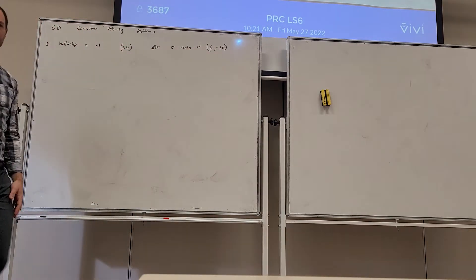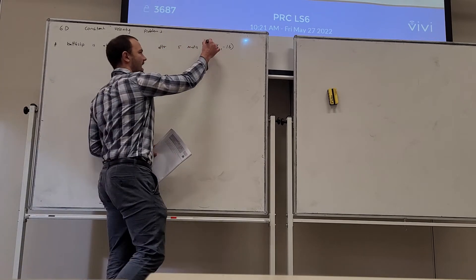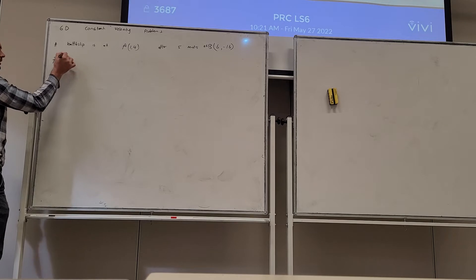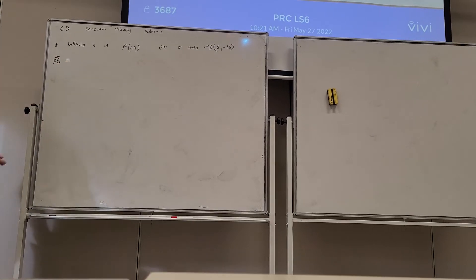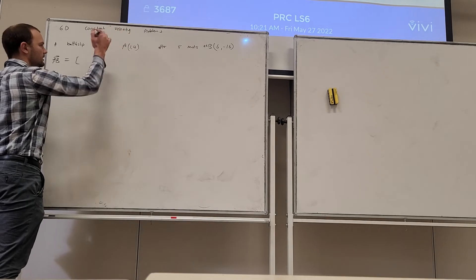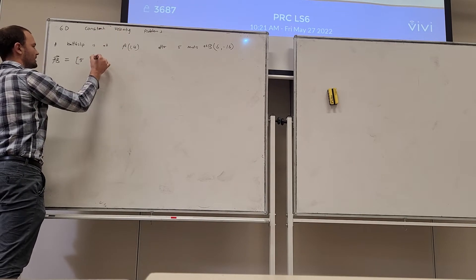So these are two points in space, let's call them A and B. Then vector AB is going to be the direction. So let's determine vector AB. That's the coordinates of B take away the coordinates of A: 6 take 1 is 5 and minus 16 take 4 is minus 20.